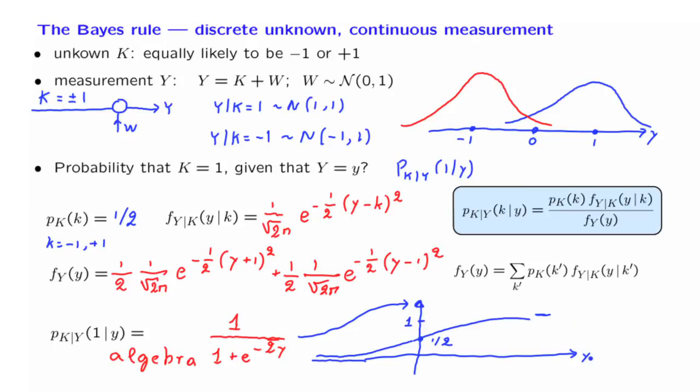If Y is very large, it is much more likely that Y is coming out of this distribution so that K is equal to 1. So the probability that K is equal to 1, if we obtain this observation, is almost 1. We have almost certainty.